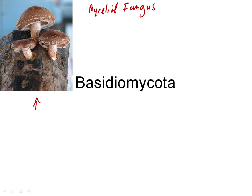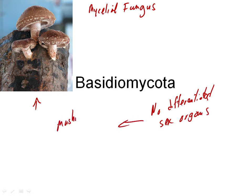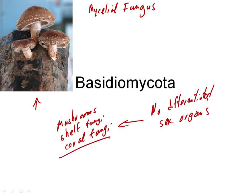There are two big groups of these fungi. One group does not have differentiated sex organs — and this actually includes the mushrooms, shell fungi, coral fungi, and a whole bunch of others we'll go through in the lecture today. The major groups of these fungi do not have differentiated sex organs.